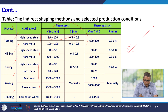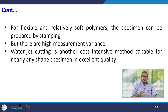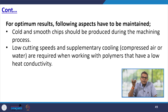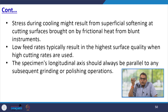For flexible and relatively soft polymers, specimens can be prepared by stamping, but there are high measurement variants. Water jet cutting is another cost-intensive method capable of producing nearly any shape of specimen in excellent quality. For optimum results: cold and smooth chips should be produced during machining; low cutting speeds and supplementary cooling (compressed air or water) are required when working with polymers having low heat conductivity; stress during cooling might result from superficial softening at cutting surfaces caused by frictional heat from blunt instruments; low feed rates typically result in the highest surface quality when high cutting rates are used; and the specimen's longitudinal axis should always be parallel to any subsequent grinding or polishing operations.